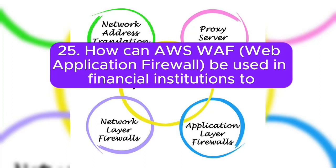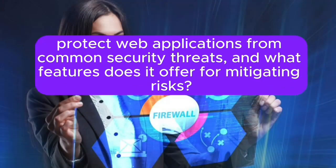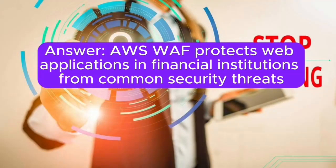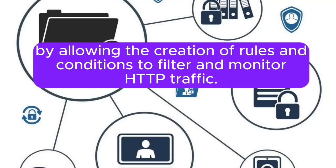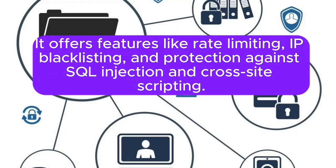Question 25: How can AWS WAF (Web Application Firewall) be used in financial institutions to protect web applications from common security threats, and what features does it offer for mitigating risks? Answer: AWS WAF protects web applications in financial institutions from common security threats by allowing the creation of rules and conditions to filter and monitor HTTP traffic. It offers features like rate limiting, IP blacklisting, and protection against SQL injection and cross-site scripting.